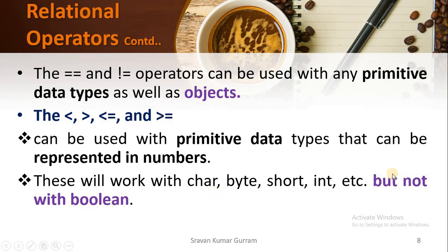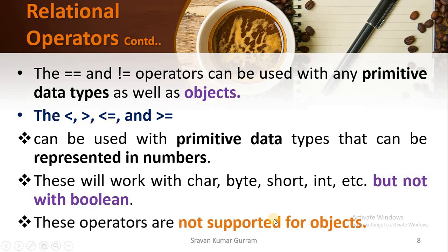These operators (less than, greater than, less than or equal to, greater than or equal to) will not work with boolean values, because we cannot meaningfully compare boolean values — we cannot compare true with false or false with true. Also, these operators are not supported for objects. This is a very important point: == and != support objects, but <, >, <=, and >= are not supported for objects.